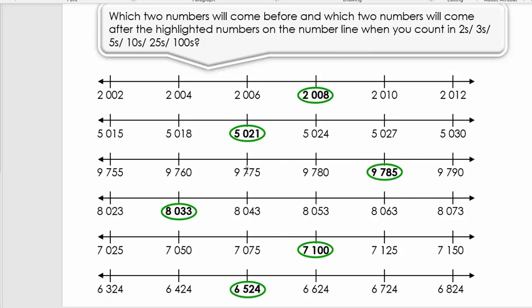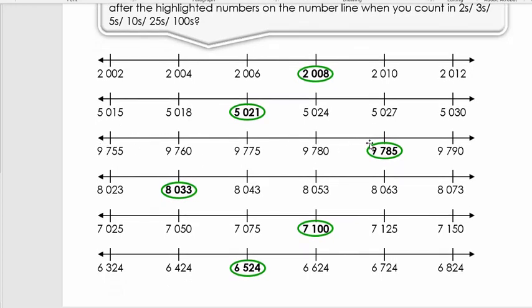So the next example then is the number that's circled is 9,785. Which number is before that? 9,780 and 9,790 is after that number. So if we look again at the last two digits, 55, 60, 75, 80, 85, 90, we see that we're counting in fives.